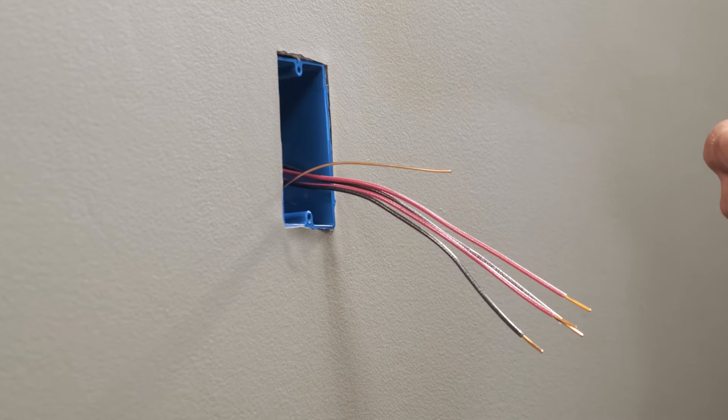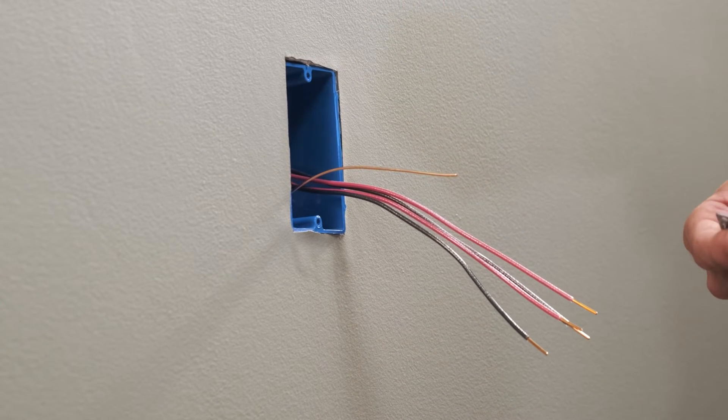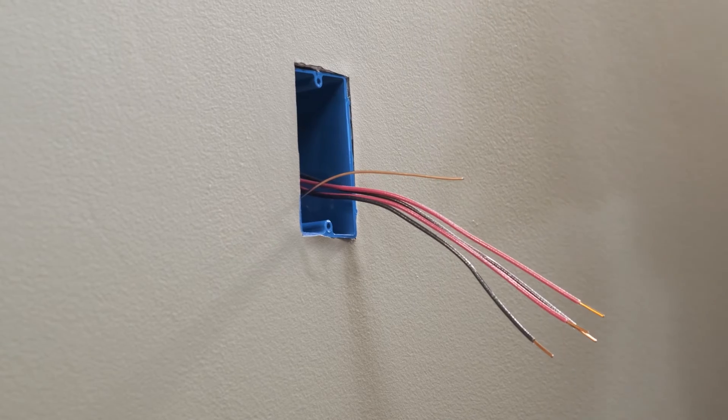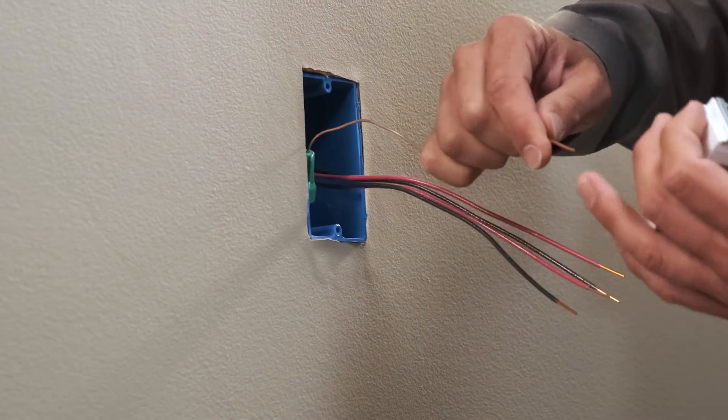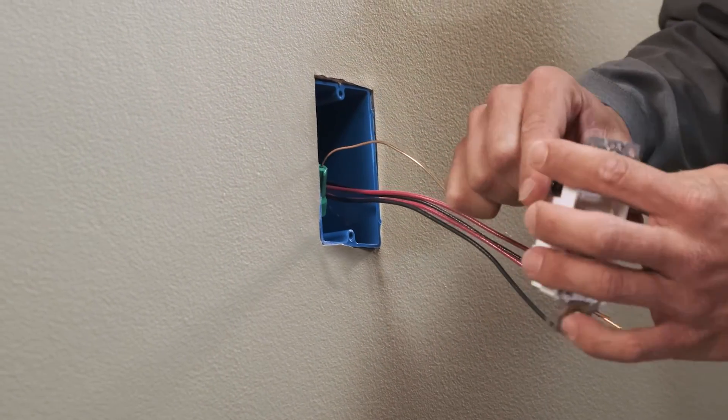In a typical 4-Way scenario, there are eight wires in the box: two red travelers, two black loads, two green grounds, and two white neutrals.